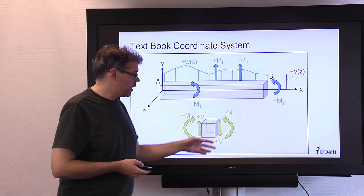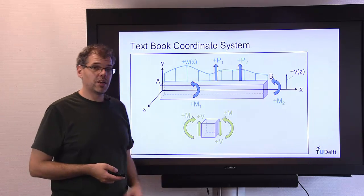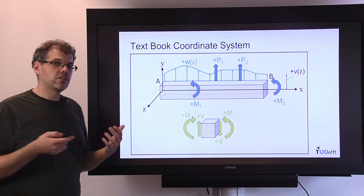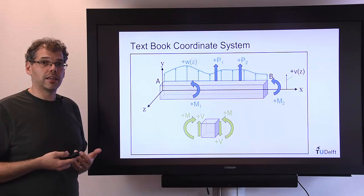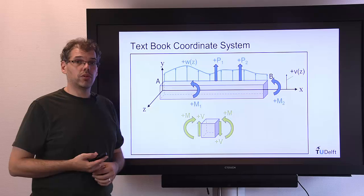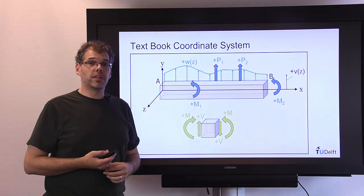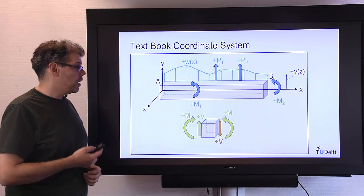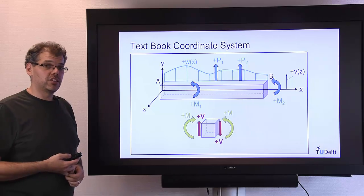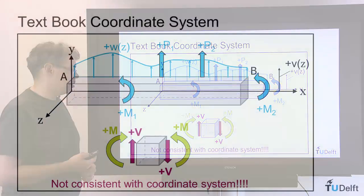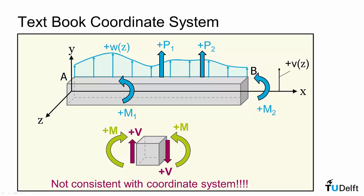For the internal loading, they use the exact same definition we do. And this is where things become problematic. This definition of positive internal loading is inconsistent with this coordinate system. And we can see that by looking at these two shear force components. If we look at the outward normal on this face, it's in the positive x, but a positive shear force is acting in the negative y direction. Therefore, they've introduced an additional negative sign.